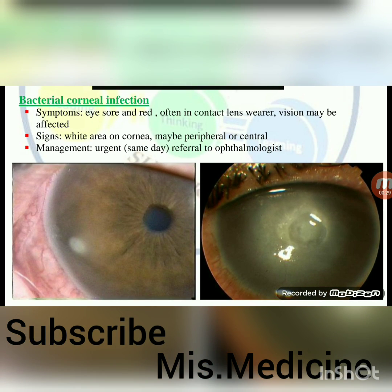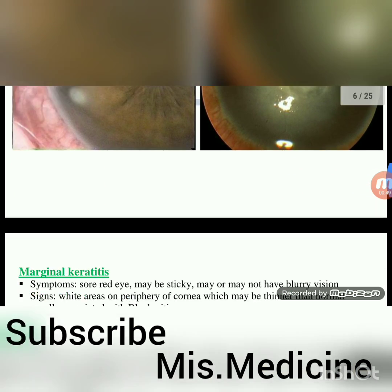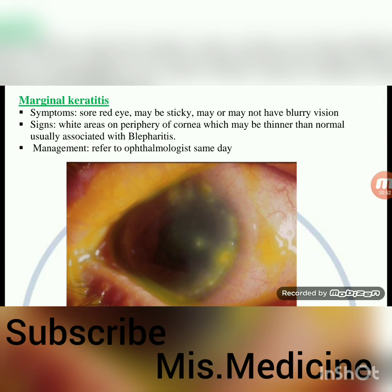Bacterial corneal infection — symptoms: eye sore and red, often in contact lens wearers, vision may be affected. Signs: white area on cornea, may be peripheral or central. Management: urgent same-day referral to ophthalmologist. Marginal keratitis — symptoms: sore red eye, may be sticky, may or may not have blurry vision. Signs: white areas on periphery of cornea, usually associated with blepharitis. Refer to ophthalmologist same day.